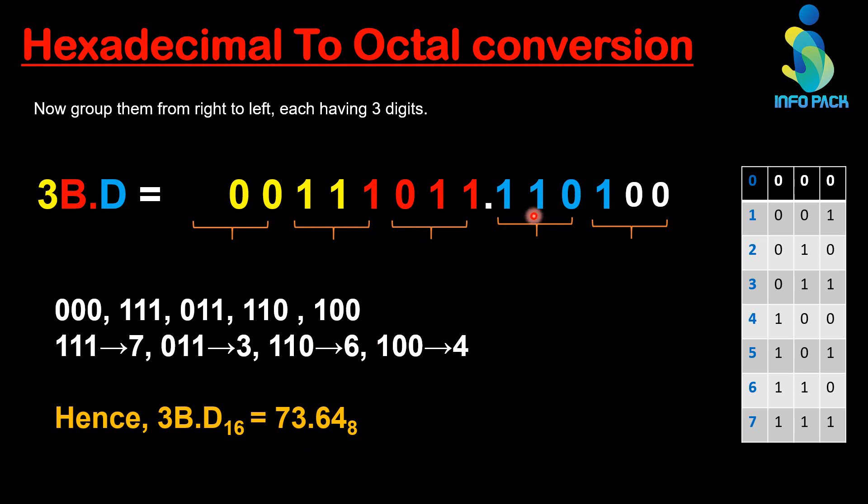Now 111 is equal to 7, 011 is equal to 3, 110 is equal to 6, and 100 is equal to 4. You have to write octal number at same position of binaries group. Today we have learned how to convert hexadecimal number into octal and hexafractional number into octal. Take care. Allah Hafiz.